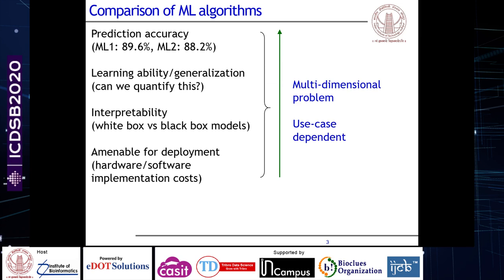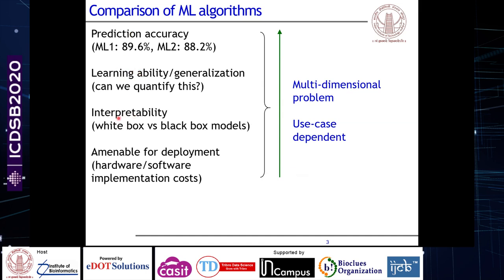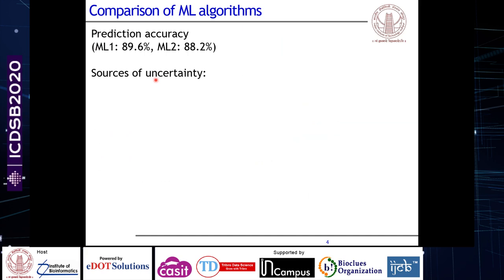The message I want to convey is that prediction accuracy should be one of the aspects, not the only aspect, for comparing machine learning algorithms. In this talk, I'm going to focus on the first two aspects: prediction accuracy and learning ability. Since this talk is meant to be generic, I'll discuss these in a general sense rather than for a specific application.